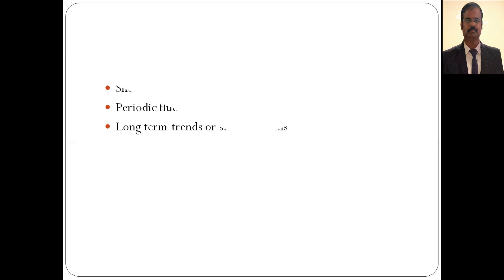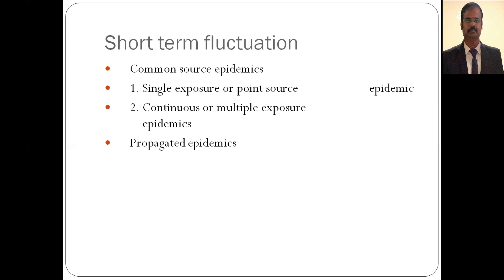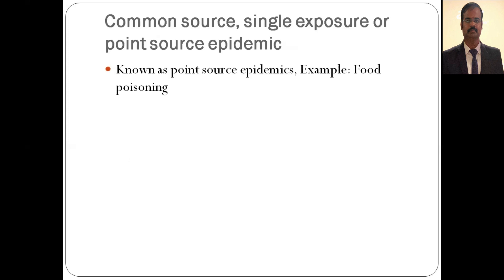Short-term fluctuations, also called epidemics, are classified into two types: common source epidemics — which include single source (common source single exposure) and multiple exposure — and propagated epidemics, as well as slow epidemics. Common source single exposure is also called a point source epidemic, which is the term most commonly used in exams.